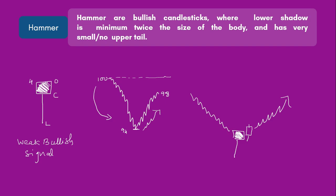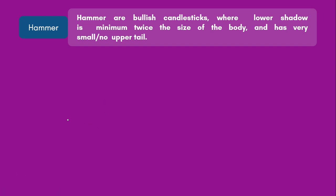You might wonder what if a hammer comes in an uptrend. If a hammer pattern appears in an uptrend — whether positive or negative — it is called a Hanging Man, no longer a hammer. A hammer in a downtrend is called a hammer, but a hammer in an uptrend is called a Hanging Man. Whenever you spot a hanging man, there are chances of the market staying flat or slightly going down. Hammer in an uptrend signifies the market may fall; hammer in a downtrend signifies the market is going to go up.